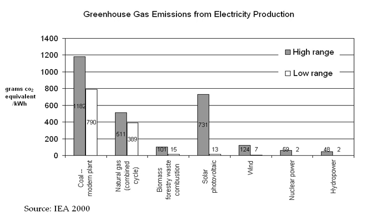Fossil fuel may be phased out with carbon neutral and carbon negative pipeline and transportation fuels created with power-to-gas and gas-to-liquids technologies. Carbon dioxide from fossil fuel flue gas can be used to produce plastic lumber, allowing carbon negative reforestation.